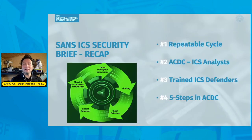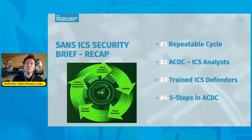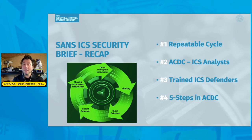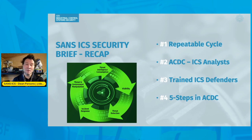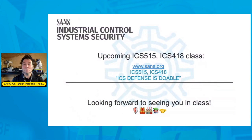So there you have it — that is the active cyber defense cycle. To recap, the ACDC cycle is a repeatable process that requires human defenders who have knowledge of industrial control system designs, security, but also understand the control system process and the engineering processes. With this knowledge and trained ICS defense knowledge, we can execute those five steps of active cyber defense: threat intelligence consumption, visibility, threat detection, industrial control system incident response, and TEM — otherwise known as threat and environment manipulation. Hopefully you enjoyed today's quick briefing. My name is Dean Parsons and I hope to see you in class soon.